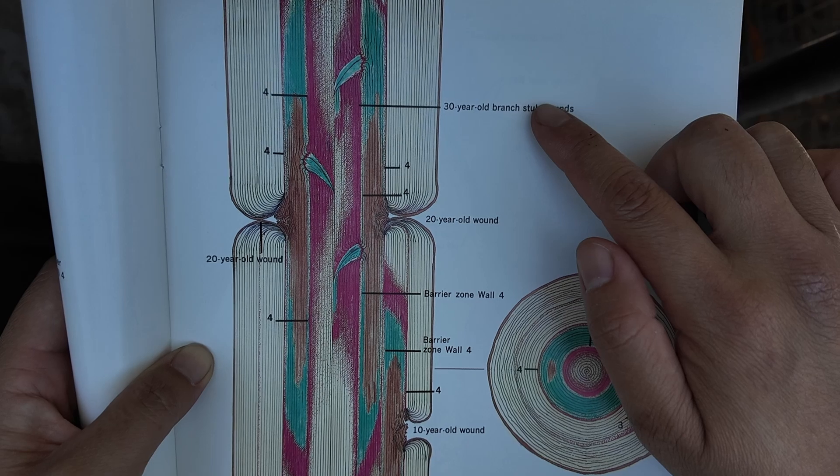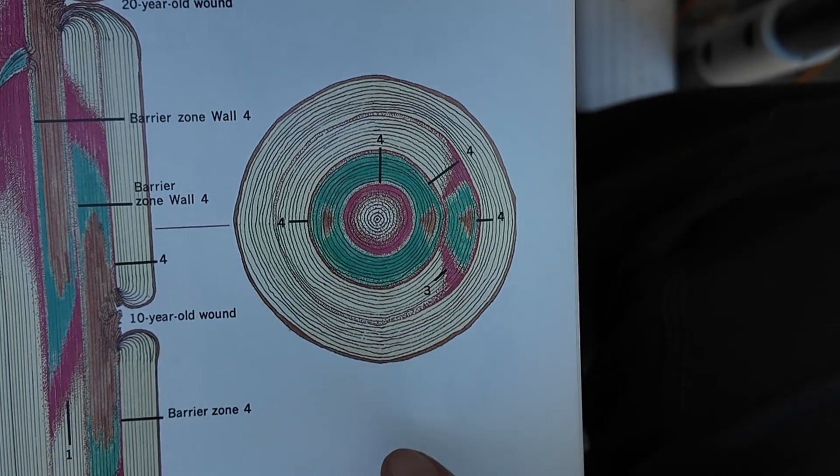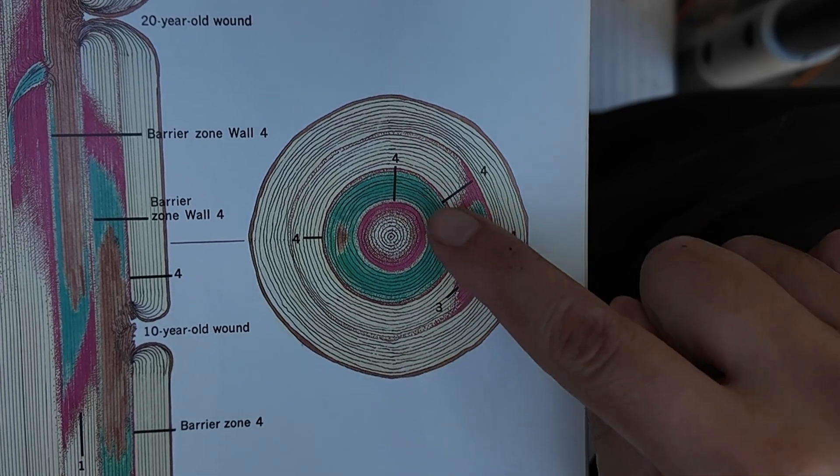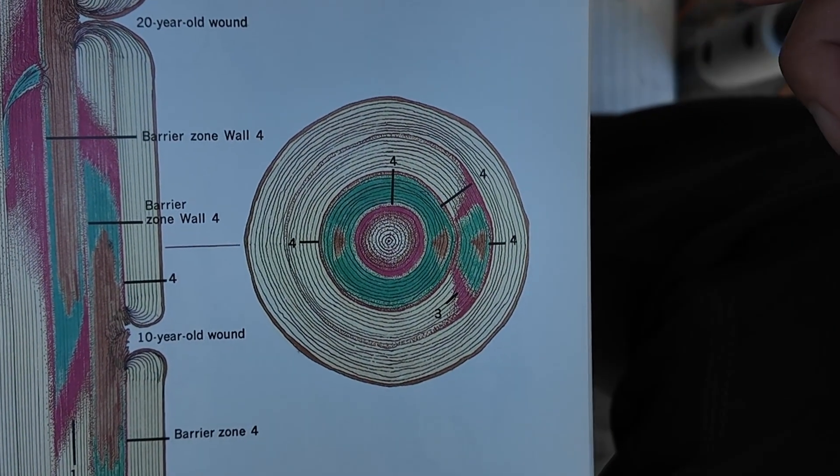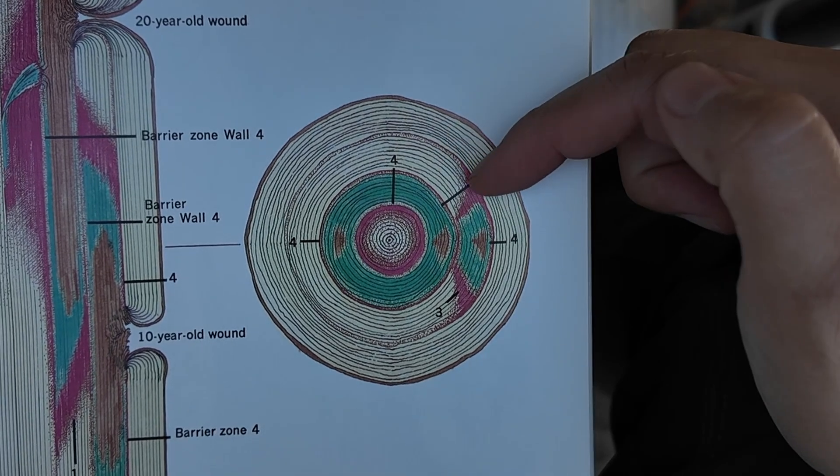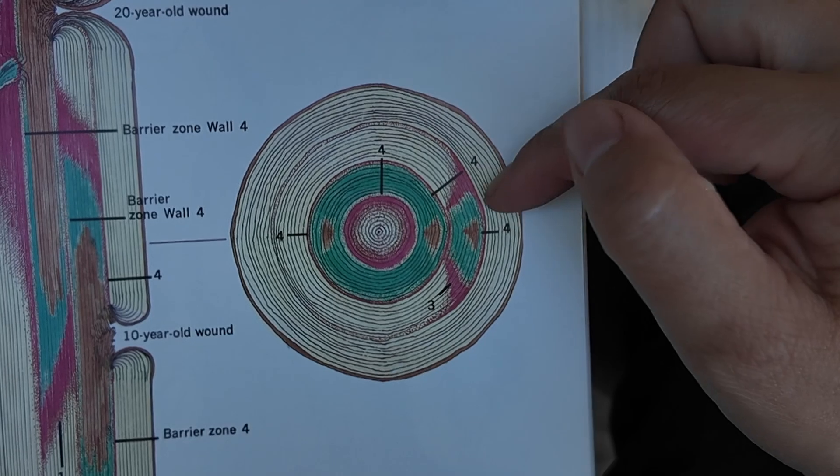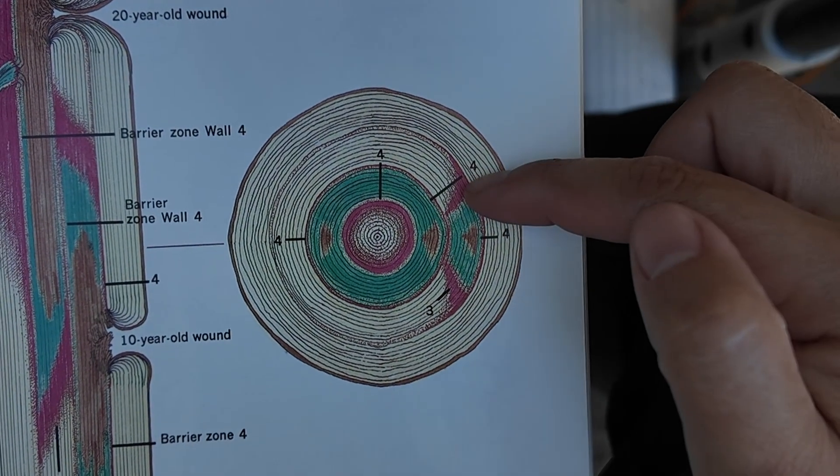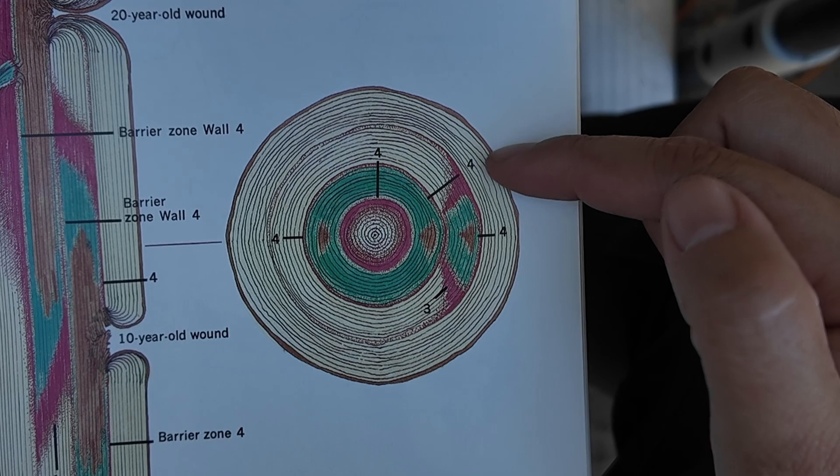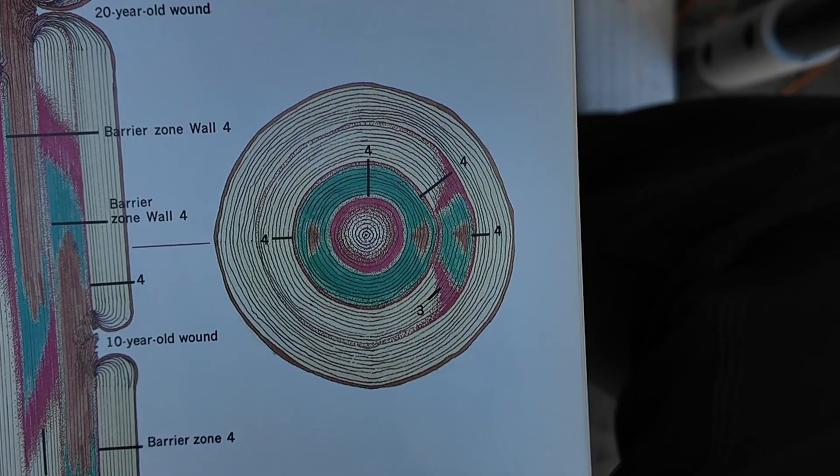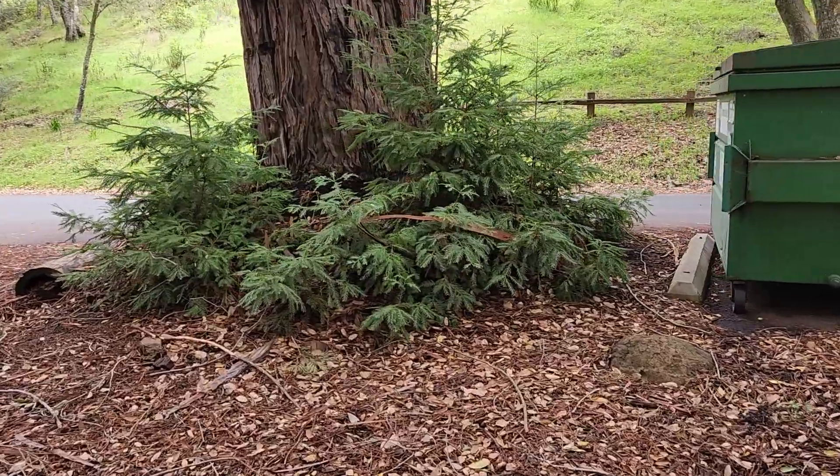Keep in mind that this process happens every time the tree is injured, and so you're going to have multiple walls one to four, multiple wall fours here. What you want to avoid doing is re-injuring the tree, because all of the resources that were originally stored inside are no longer accessible to the outside of the tree. If it happens often enough, the tree can wall itself to death. It won't have enough storage to complete the processes that it needs to stay alive and healthy.